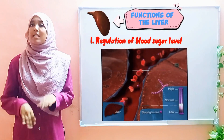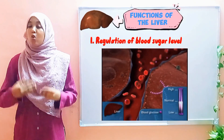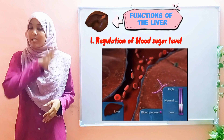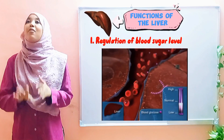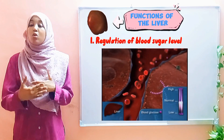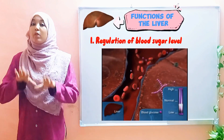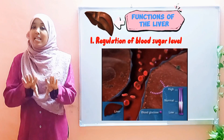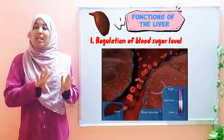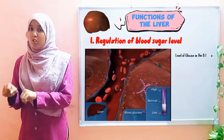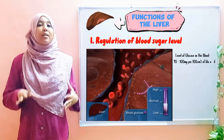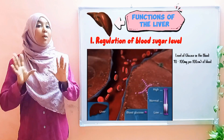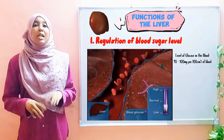Regulation of blood sugar levels simply means that the liver plays a role in controlling the amount of sugar present in our blood. Sugar here refers to glucose that is present in our blood. The amount of glucose present in our blood is maintained within a certain range — between 90 to 100 milligrams per 100 cubic centimeters of blood.